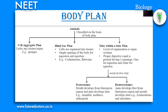The tube within a tube plan occurs in two ways: protostomes and deuterostomes. Protostomes means mouth develops from the blastopore region and the anus develops later — examples: annelids, molluscs and arthropods. Deuterostomes means the anus develops first from the blastopore region and the mouth develops later — examples: echinoderms and chordates.